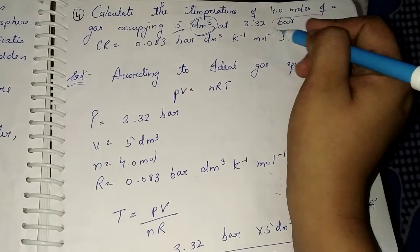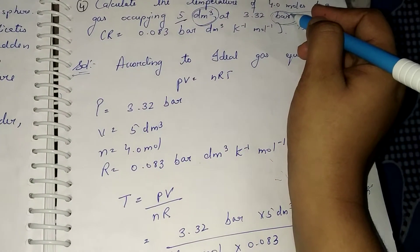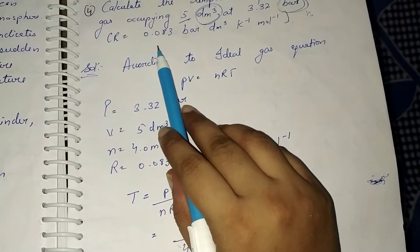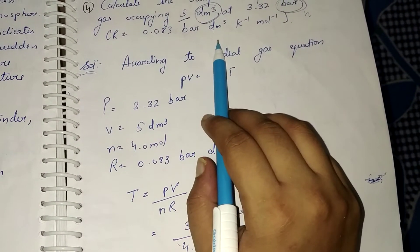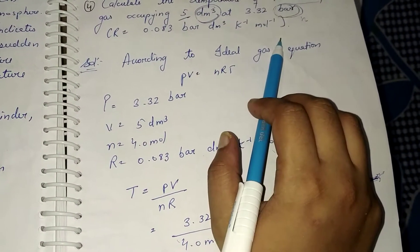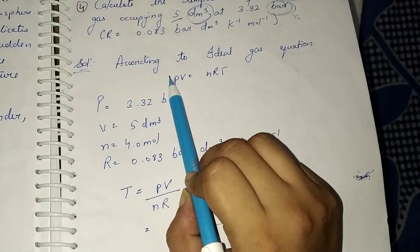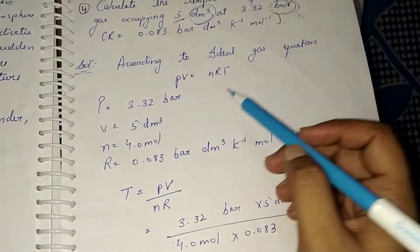At 3.32 bar - this tells us the pressure is given. And R, the gas constant value given is 0.083 bar decimeter cube per kelvin per mole. So by applying the ideal gas equation...